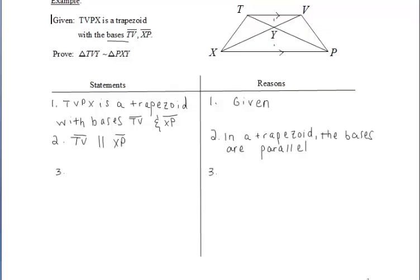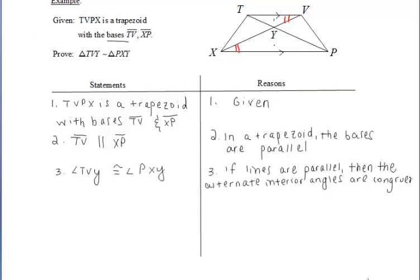So let's list that TV is parallel to XP. And then from that, we can get congruent angles. So we know that the alternate interior angles, and I'm highlighting in red here,